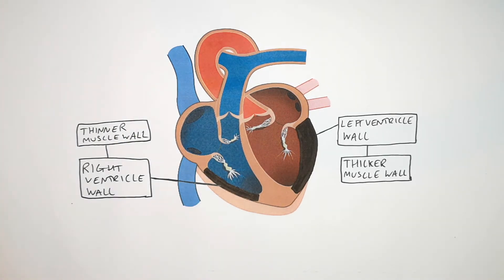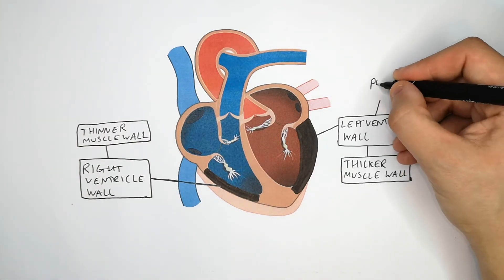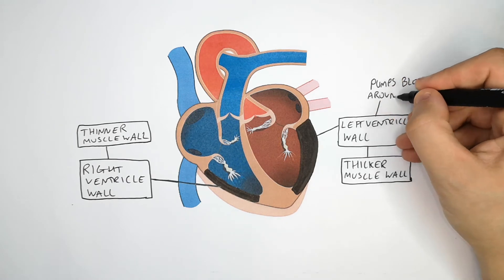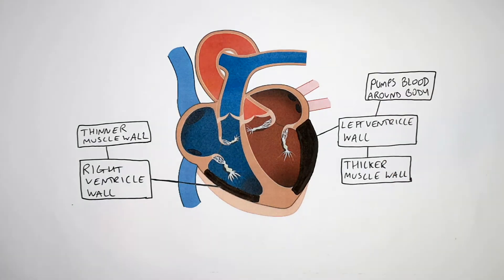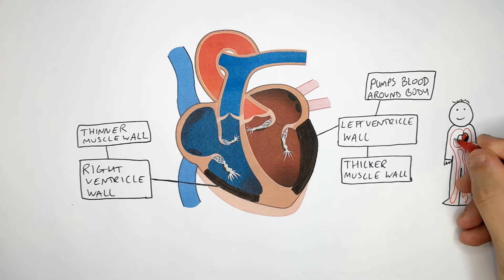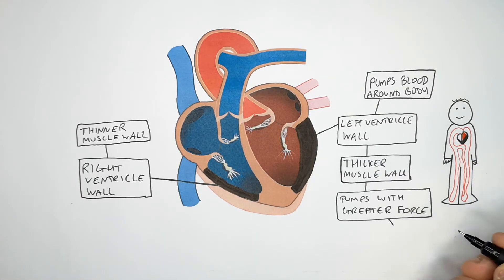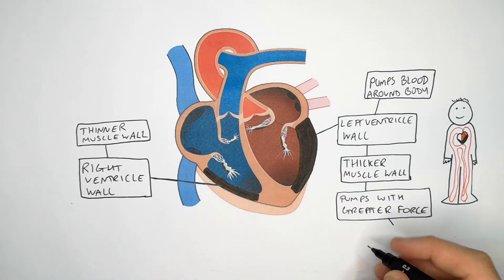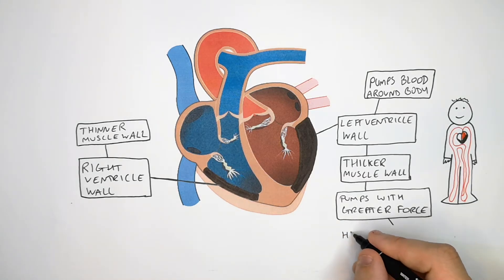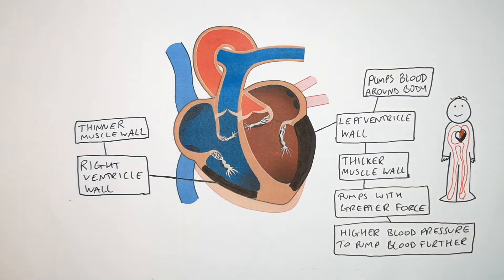The left ventricle wall is thicker because it pumps blood around the body — it pumps blood further around the body. As you can see, the left ventricle is pumping blood around the body, so it pumps with a greater force and therefore a higher blood pressure to pump blood around the body.